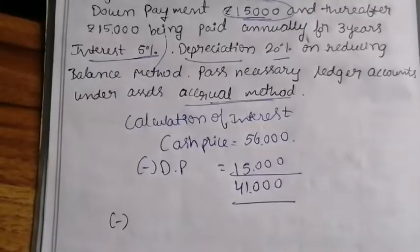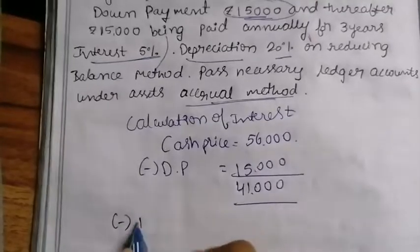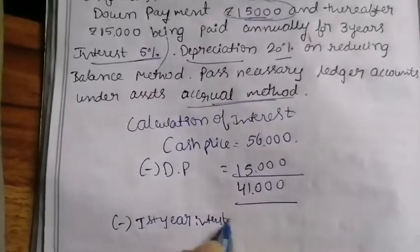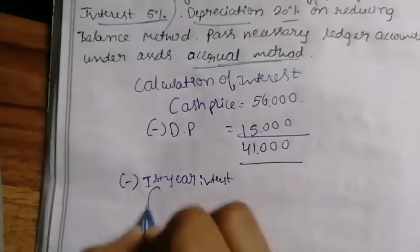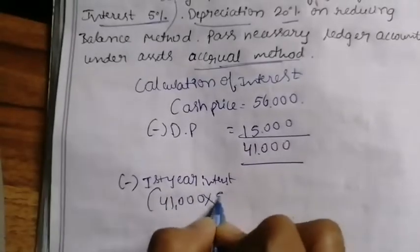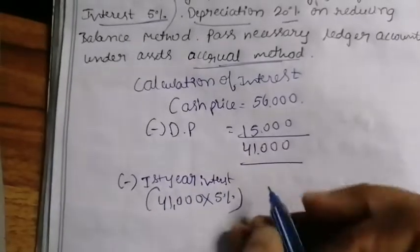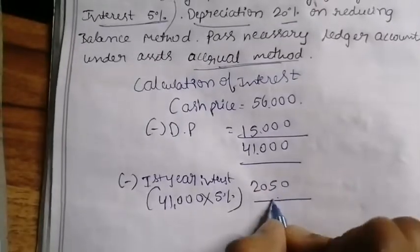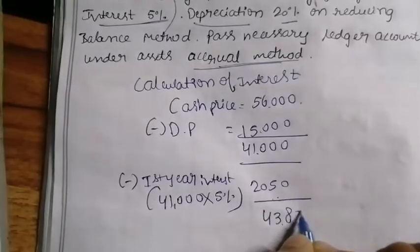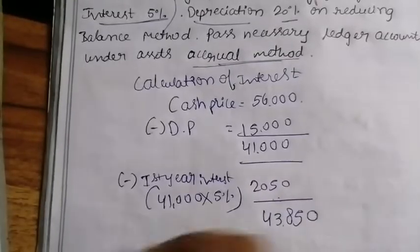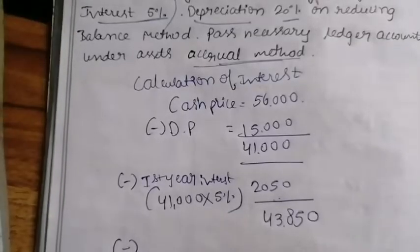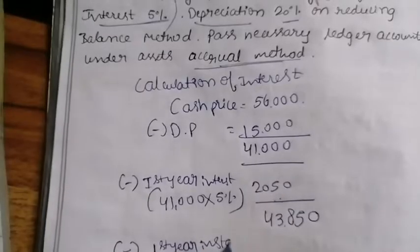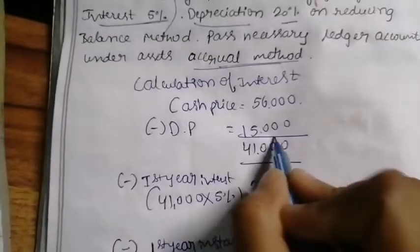First year interest: ₹41,000 into 5% gives us ₹2,050. So ₹41,000 plus ₹2,050 equals ₹43,050. Minus the first year installment of ₹15,000, we get the balance carried forward.